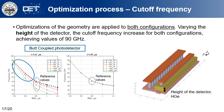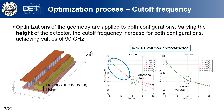Focusing on the cutoff frequency: for the back coupling configuration, the cutoff frequency increases while reducing the height of the detector, achieving incredibly high values near 90 GHz. At 1.31 micrometers, the sensitivity with respect to input optical power is drastically reduced. The mode evolution case shows the same behavior — the cutoff frequency increases when reducing the height of the detector, and the power dependence is also drastically reduced.